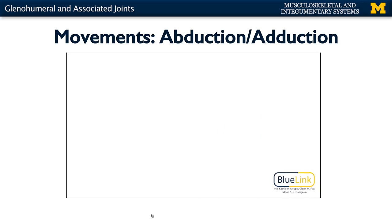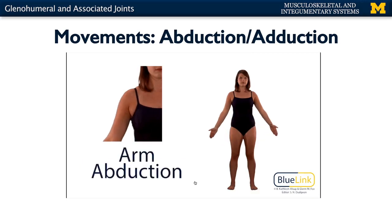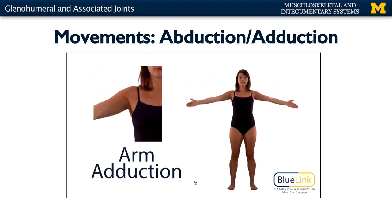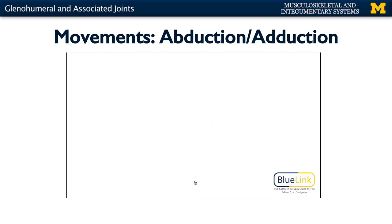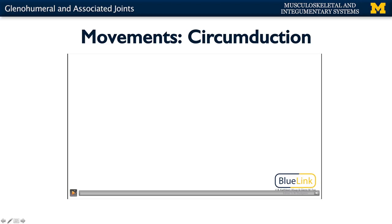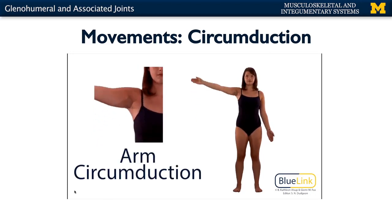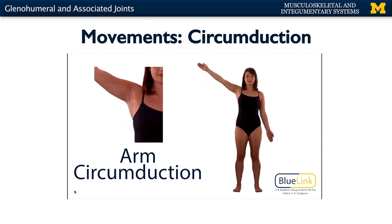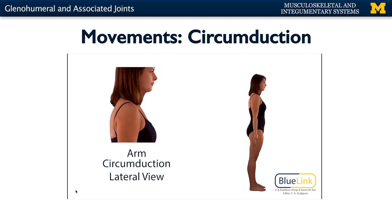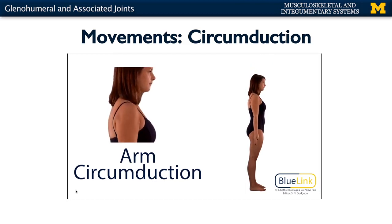Now let's talk about abduction and adduction. Back in anatomical position, with abduction you can see that you're moving away in a coronal or frontal plane, and you can actually have a wide range of movement. With adduction, you're adding back to the body. Any time you have flexion, extension, abduction, and adduction, you can have circumduction — and you have a huge range of movement in terms of circumduction. You can see abduction, flexion, extension, and adduction all occurring in one complex movement, with a greater range of motion visible from the lateral view.